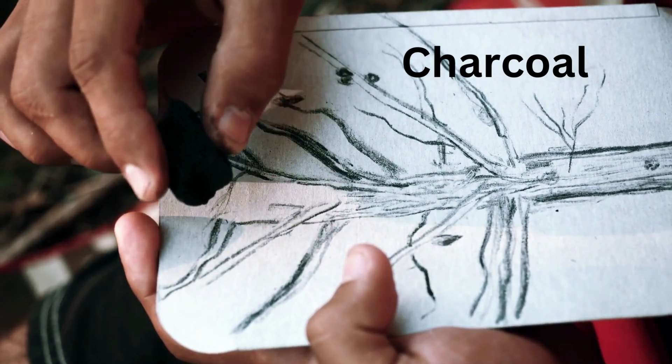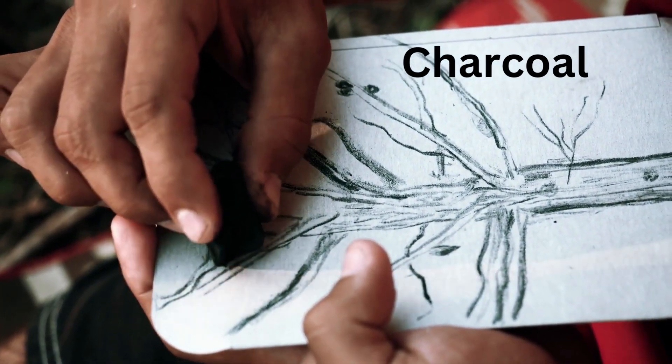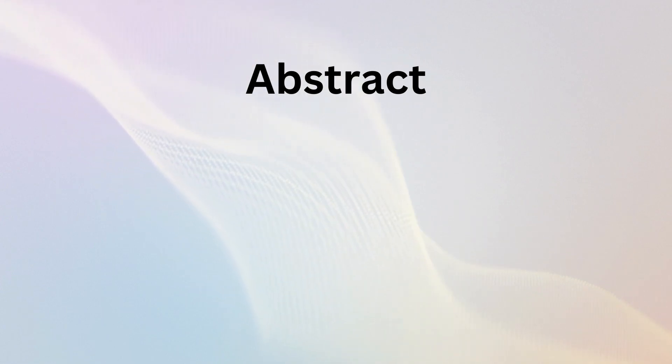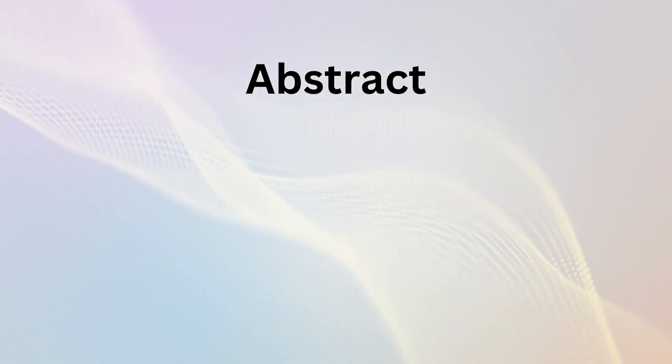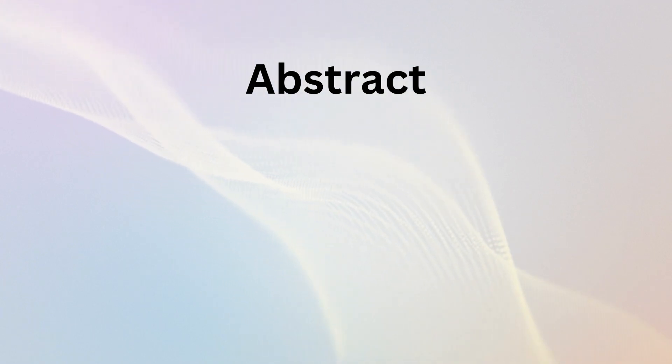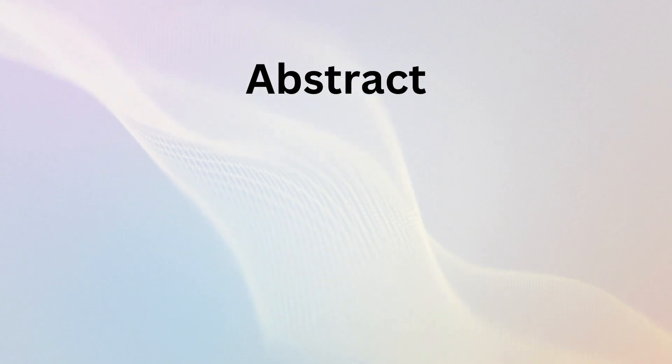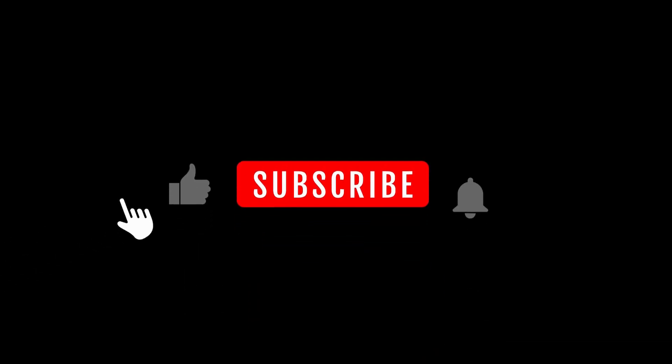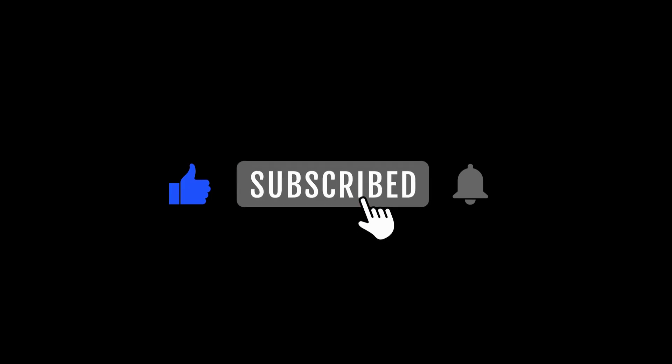C for charcoal. O for abstract. It's all about using colors, shapes, and lines to create feelings and ideas. Imagine you have a coloring book, but instead of coloring in the lines to make a picture of a cat or a tree, you just use the colors and shapes to make something that feels happy or sad or exciting. Please subscribe, like, and share if you enjoyed learning with me.